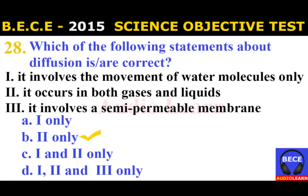Number 28: Which of the following statements about diffusion is correct? I. It involves the movement of water molecules only, II. It occurs in both gases and liquids, III. It involves a semi-permeable membrane. Possible answers: A. I only, B. II only, C. I and II only, D. I, II and III. The answer is B. II only.